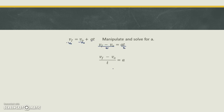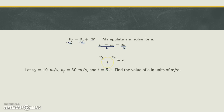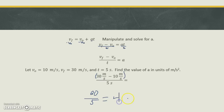Let's say v₀ is equal to 10 meters per second, vf is equal to 30 meters per second, and t is 5 seconds. Let's plug this in and solve for acceleration. We would have 30 m/s minus 10 m/s, all divided by 5. So 30 minus 10 gives you 20, and you divide that by 5 — 20 divided by 5 would be 4. So you should get 4 meters per second squared.